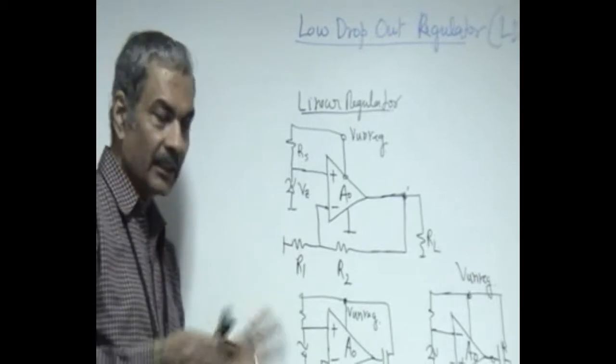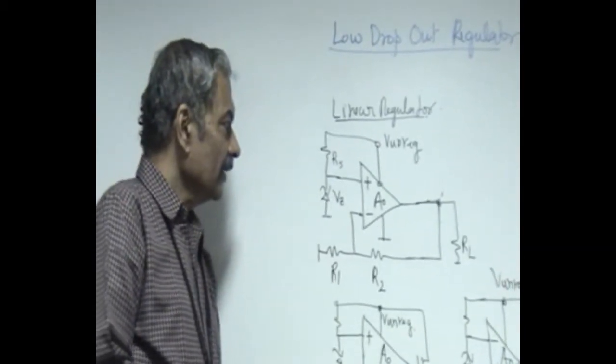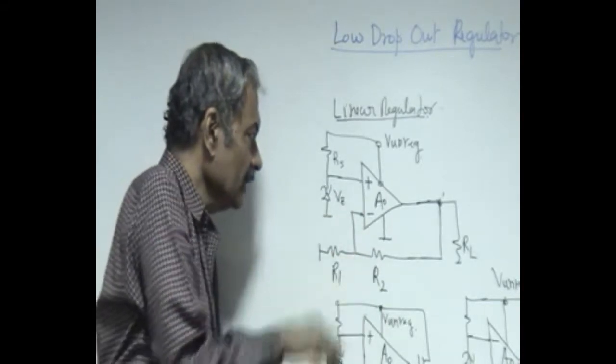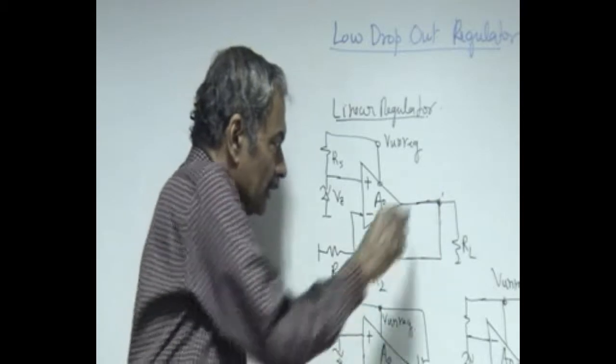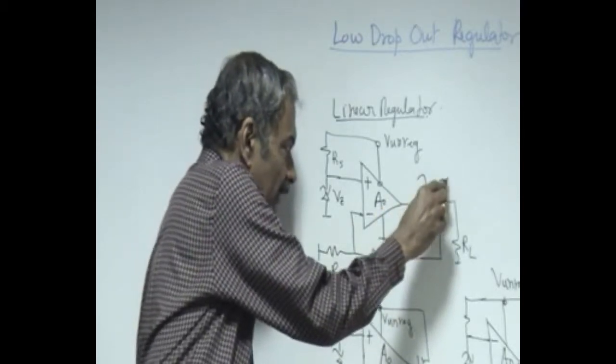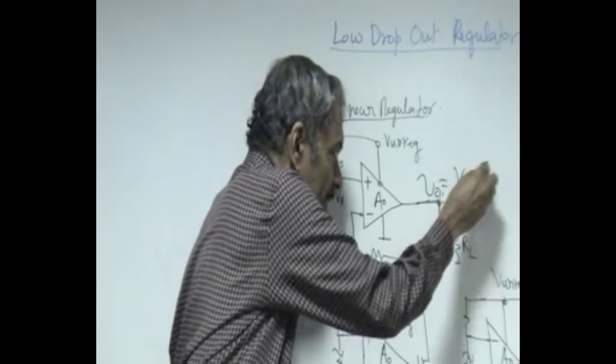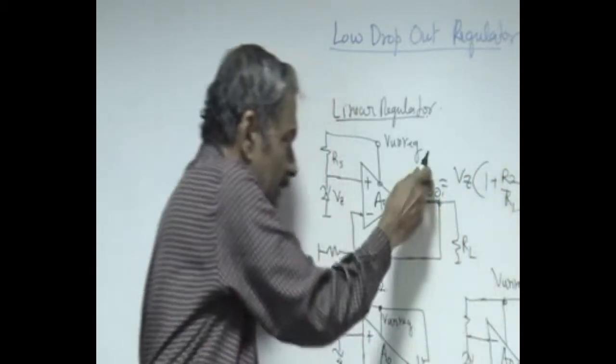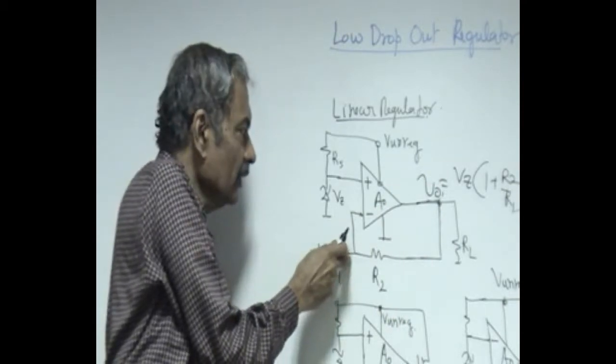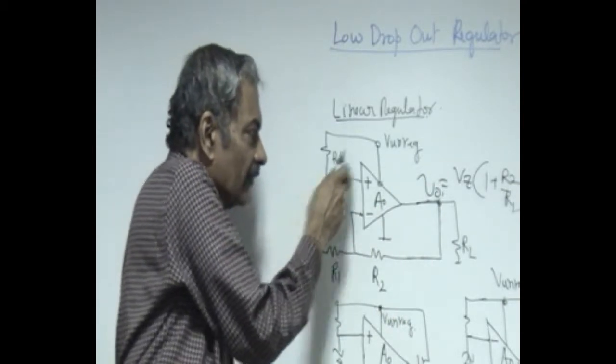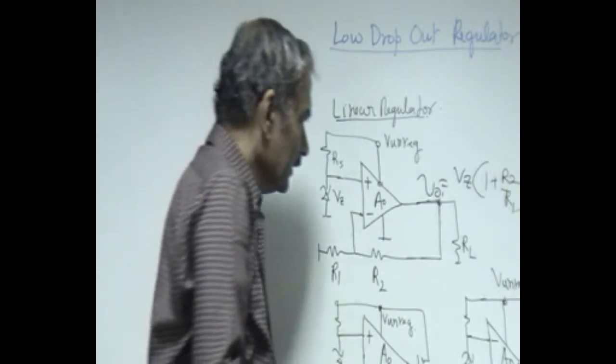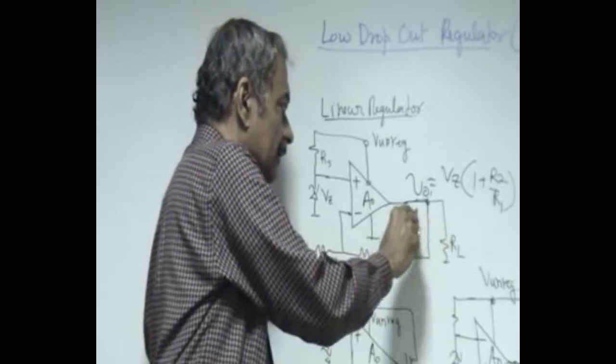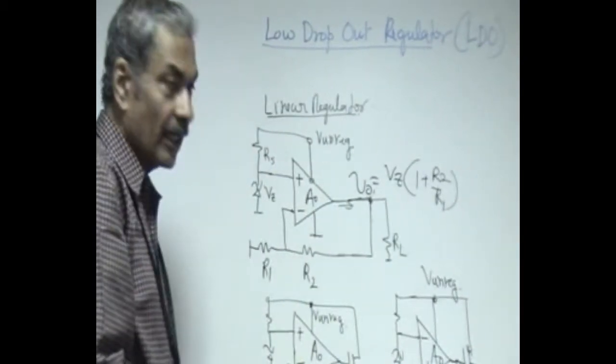So Vz is a reference which is constant, and if it is negative feedback like this, then we know that the gain of this whole thing, V_naught, is going to be equal to Vz times (1 + R2/R1). Because V_naught times beta, where beta is R1/(R1+R2), is made equal to Vz. Therefore, Vz times (1 + R2/R1) is what the output is going to be, and the load can be delivered current by this operational amplifier.